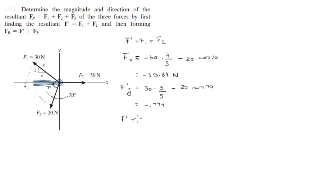It's very close to zero, which means they almost cancel out in the Y direction. So F prime will be equal to negative 30.84 in the i unit vector direction minus 0.794 in the j direction. And we know that F3 is equal to 50 on the positive X direction.